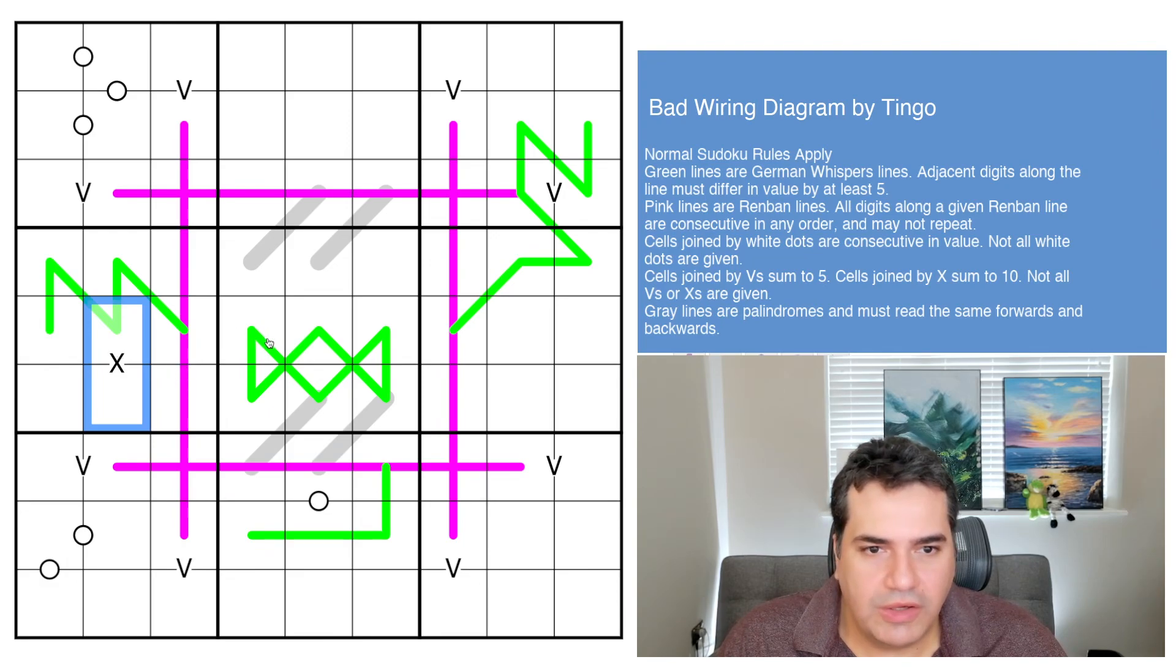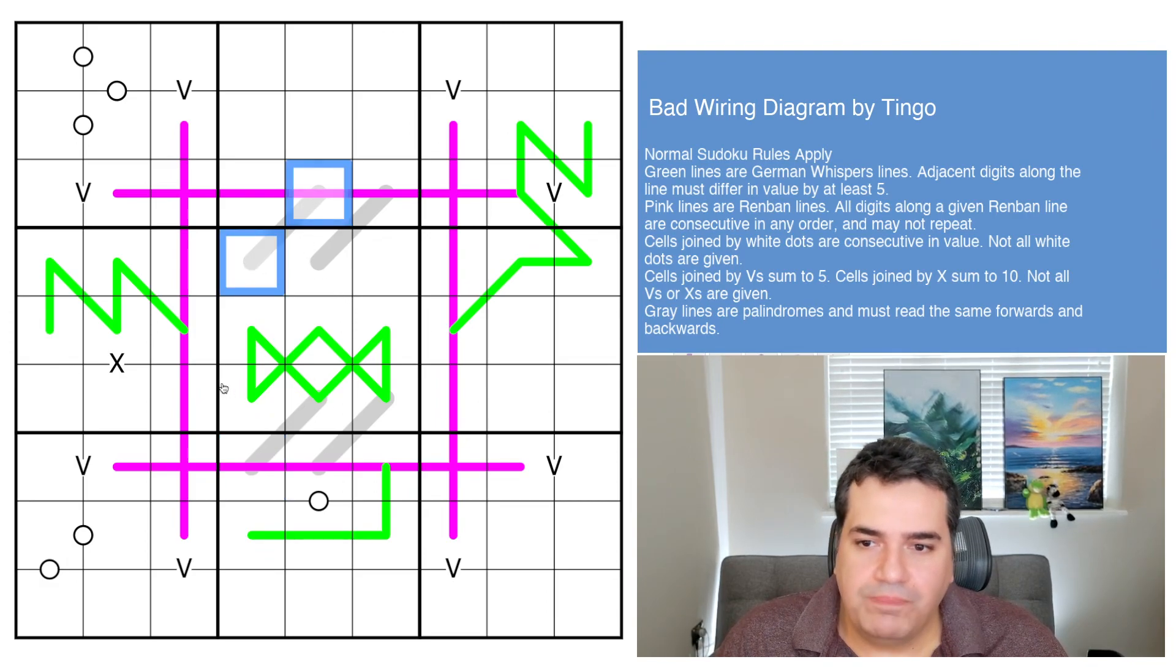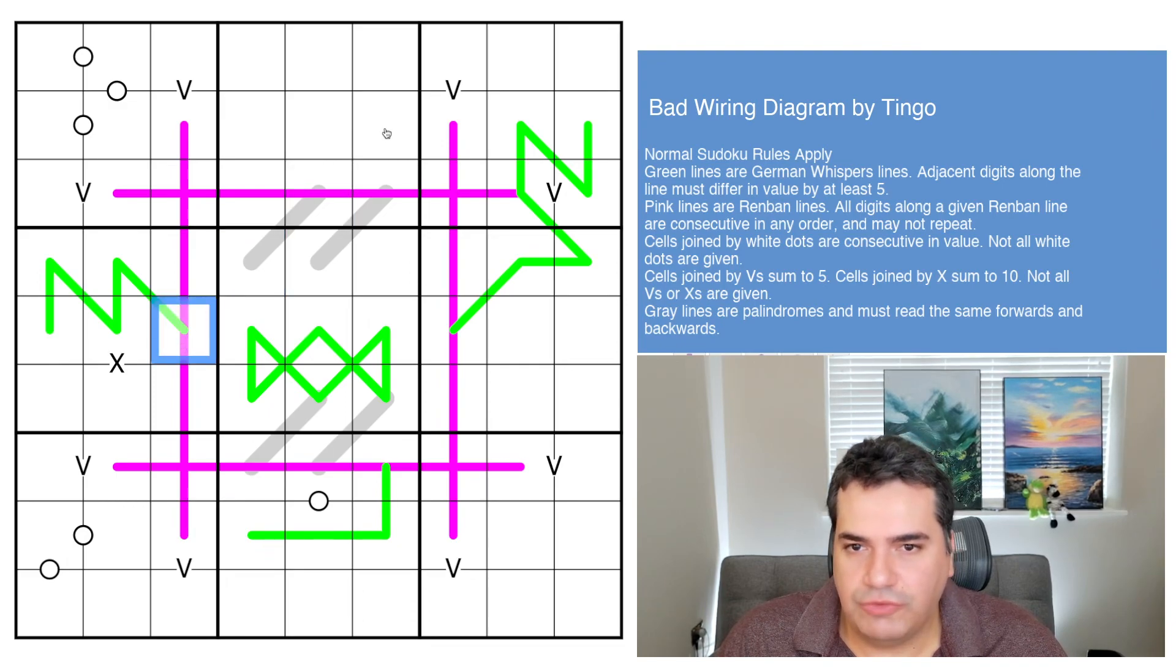Then lastly, we have gray lines are palindromes. And I believe that's the first time we've also seen those on the channel. So essentially, this time we've got only two cell palindromes, so it means this cell is the same as this cell. But palindromes are often a bit longer. So it would mean this cell would be the same as that. This one will be the same as that. You need to be able to read them the same forwards and backwards. And that's all the rules that we have for today.